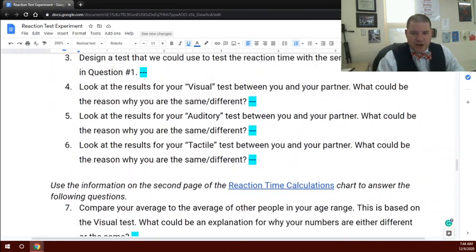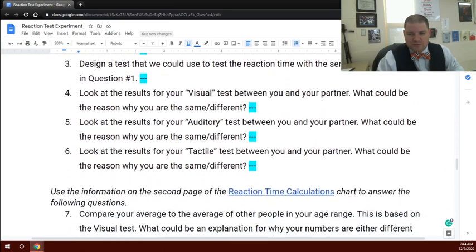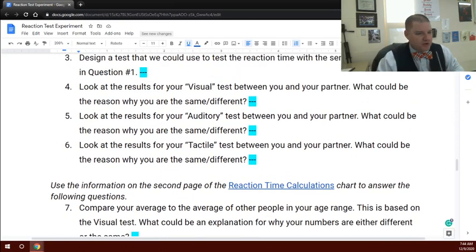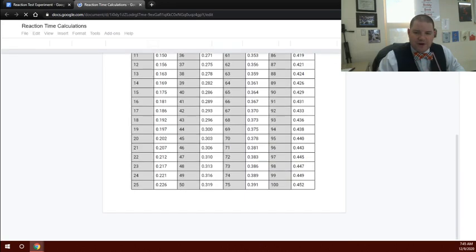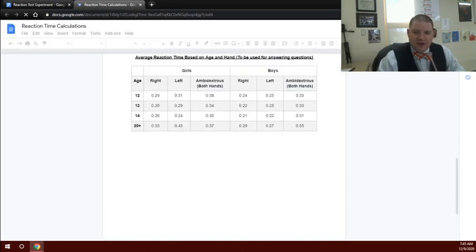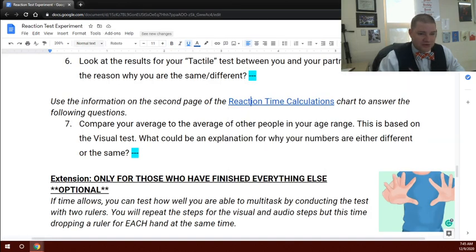There's then a set of questions for you to answer afterwards. So looking at things between the visual, auditory, and tactile, meaning sight, hearing, and touch, and then comparing the averages to the reaction time calculations. If you go down to the very last little bit, it gives about the average of kids ages 12, 13, 14, which is your age range there, and then how people ranked 20-plus years, and you can see how reaction times can differ and where you fit in with those calculations there.